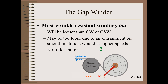However, in that class we often did not have time to explain what to do with a center surface winder when it is put into gap mode as opposed to a pure gap winder. In other words, what do we do with the motor attached to the roller? You can't, or at least shouldn't, merely turn it off.